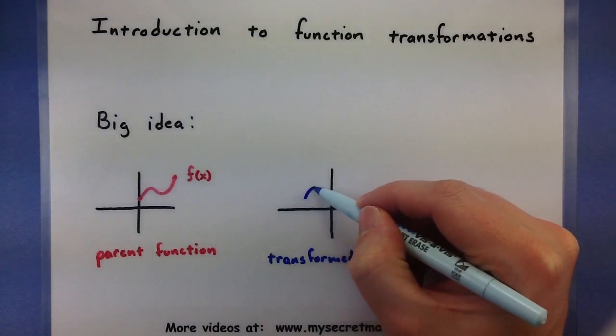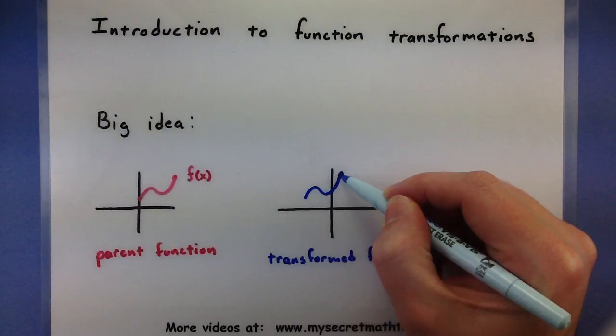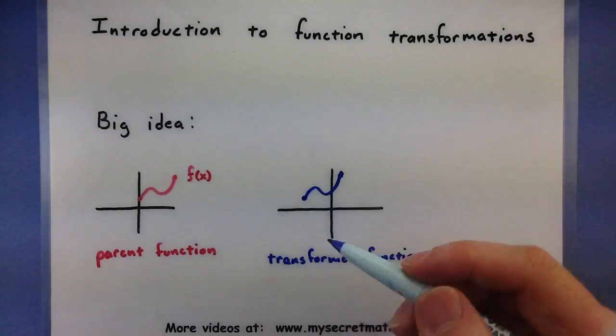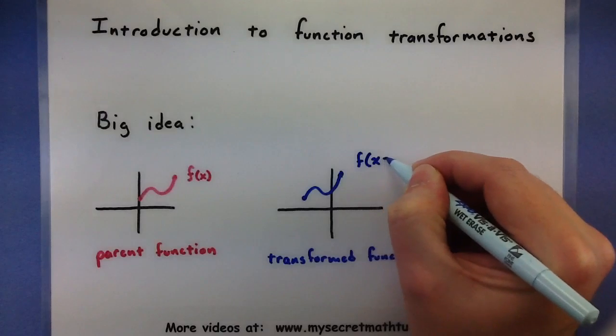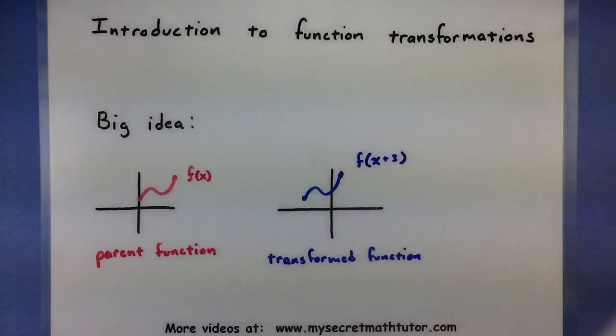The special thing about this new function which we end up creating is that it will often inherit a lot of the same properties as the original function. You can see that in my little example here that even in my transformed function it has a lot of the same curves, it's just been put into a different spot. So these transformations are really helpful if we know a lot about our original function because we can figure out what it turns into.